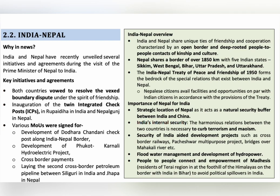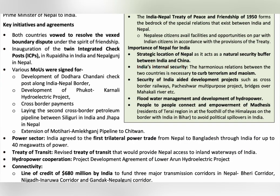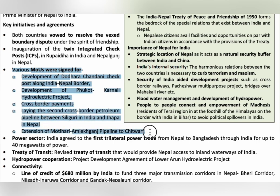India and Nepal relations were recently in the news because in June, Nepal's Prime Minister visited India and several initiatives and agreements were signed. Twin Integrated Check Posts were inaugurated at Rupaidiha in India and Nepalgunj in Nepal. India and Nepal share open borders with a border length of 1,850 kilometers. Various Memoranda of Understanding were also signed between the two countries.